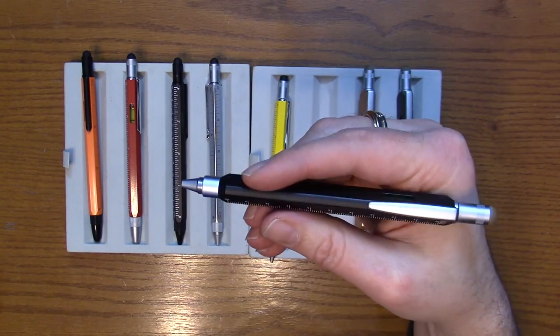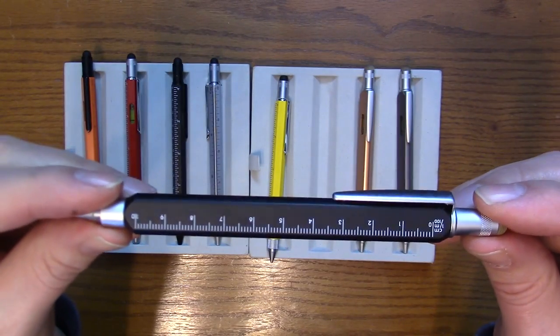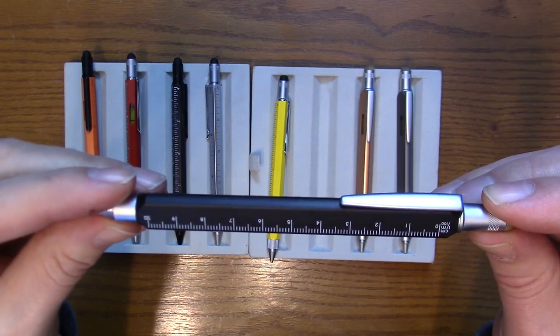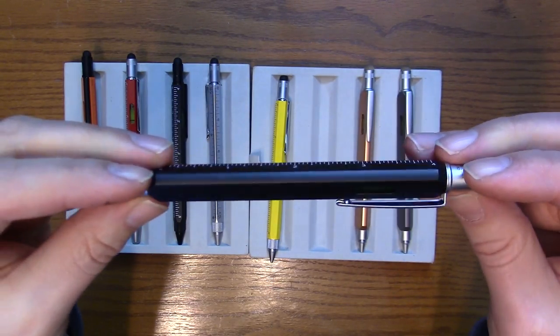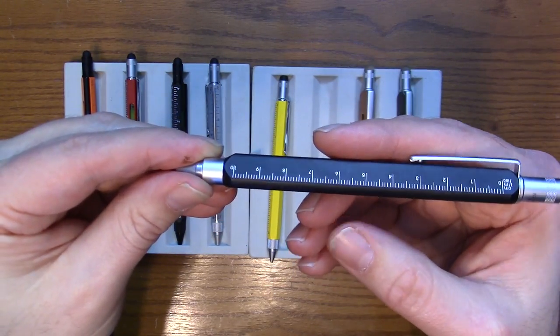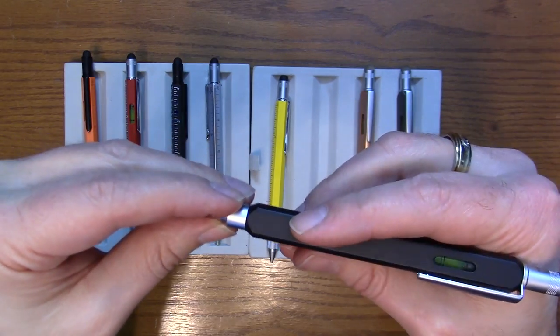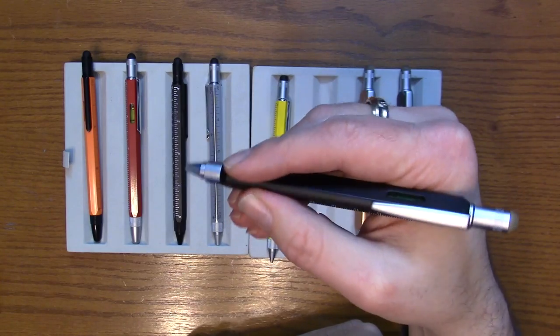You only get a couple of rulers here. We've got centimeters, inches. That's all we get. Nothing on this side. Four inch ruler and ten centimeters. But nice comfortable tripod grip here.